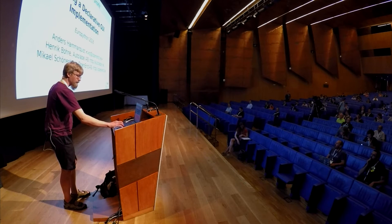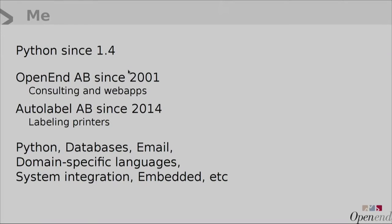But first a bit about me. I motivate my five-star Python rating by having been at it since Python 1.4. I've been working at OpenEnd since 2001, and I've been consulting at Autolabel where we did this work since 2014. I do all kinds of stuff because we're small companies, so I get to do everything.